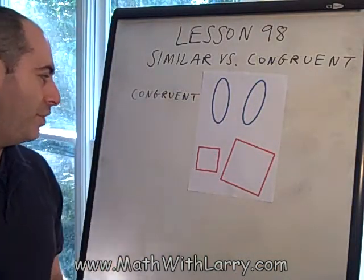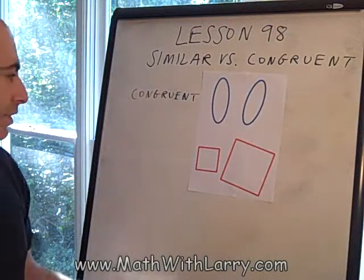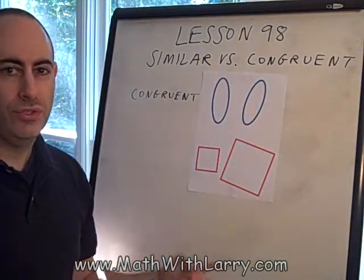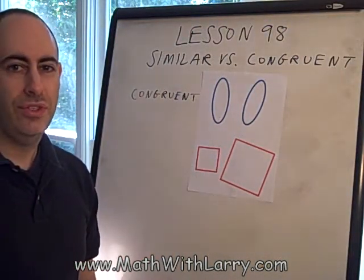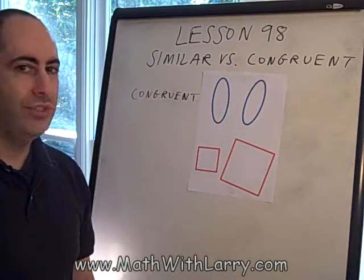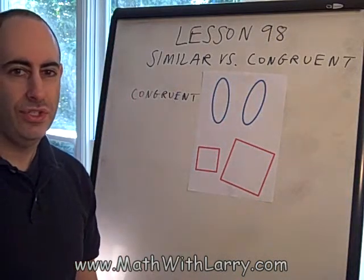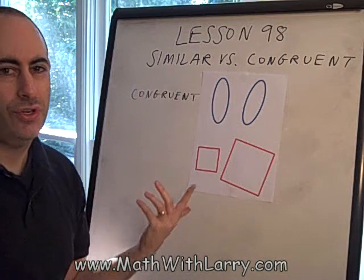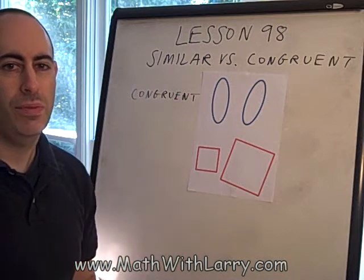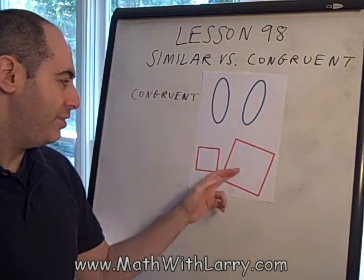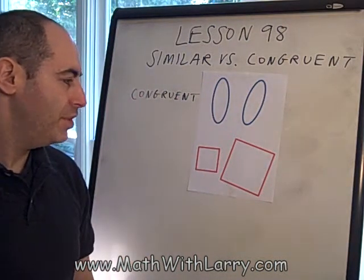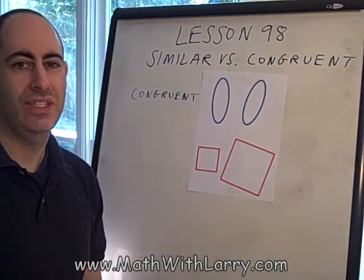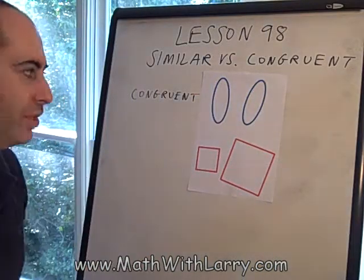Let's take a look at these squares here. We can obviously see that they're both squares, so they're exactly the same shape, but we can see that they're different sizes. Now again, the rotation doesn't matter — this one is rotated, but we don't care about that. All that matters is that they're the same shape but different sizes. So we say that the two squares are similar to one another.